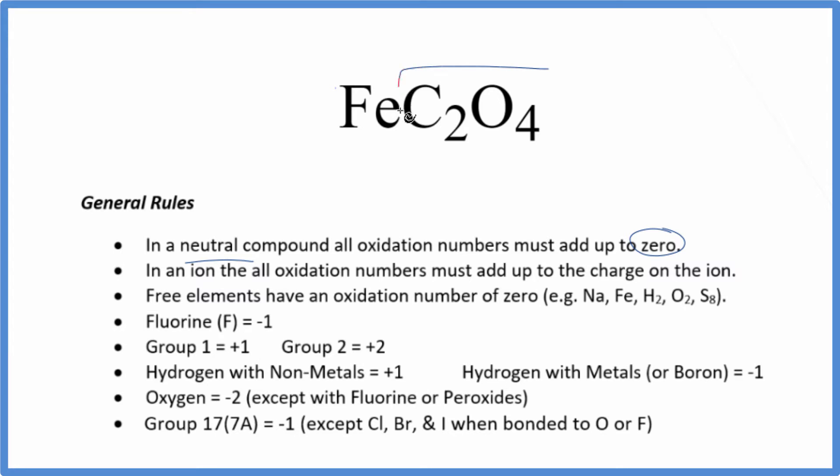But the key is realizing that C2O4 is called the oxalate ion. It's a polyatomic ion and the whole thing has an ionic charge of 2 minus. So since for an ion all the oxidation numbers add up to the charge, we know that the oxidation number here is going to be minus 2, so the iron has to be plus 2, so we end up with zero.